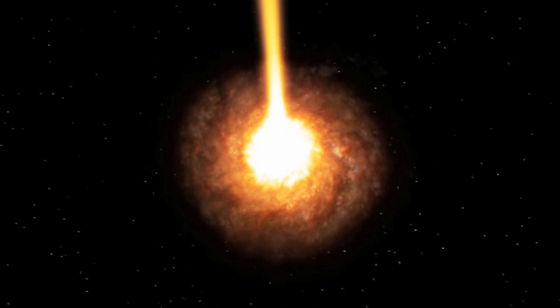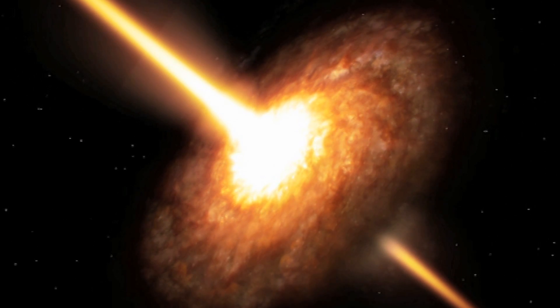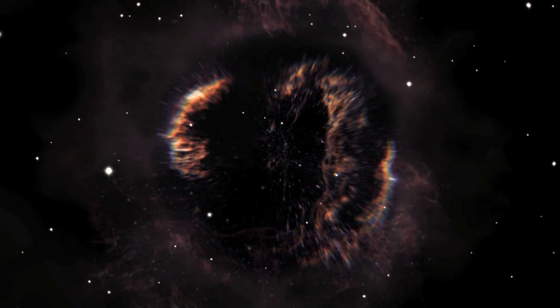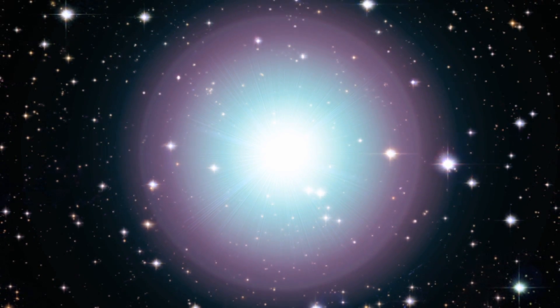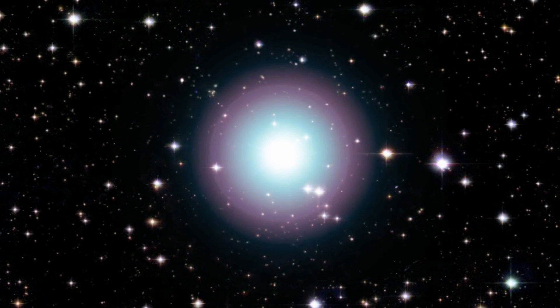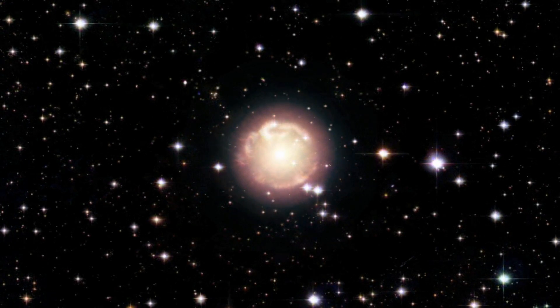Black holes come in different sizes. We've had solid evidence for the smaller ones since the 1970s. These form when a huge star explodes at the end of its life. As the outer layers are blown away, the star's core collapses in on itself, forming an incredibly dense ball. For instance, a black hole with the same mass as the Sun would have a radius of only a few kilometers.